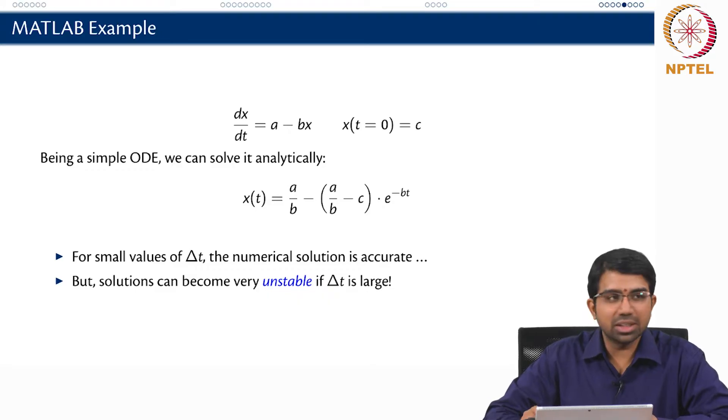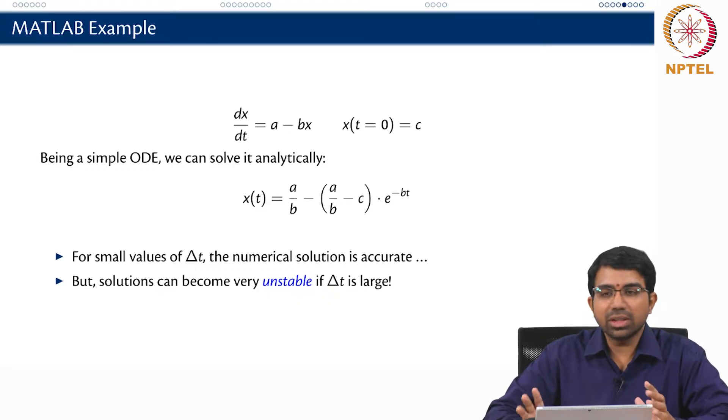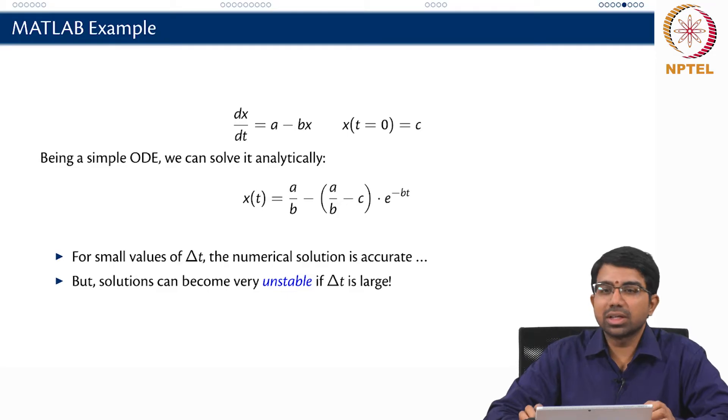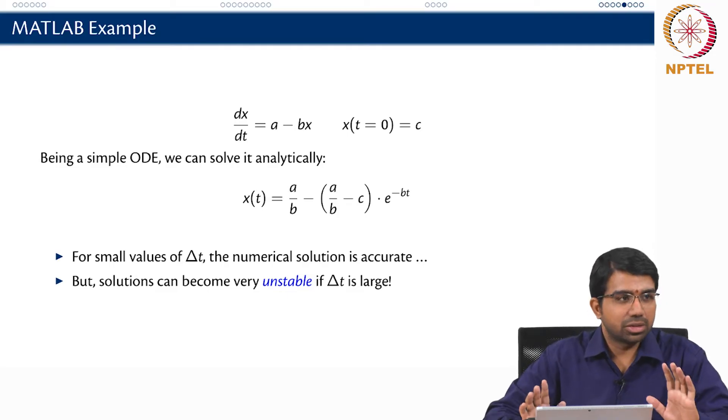If you change delta t, one thing you can imagine is that the lower the delta t, the better the accuracy.